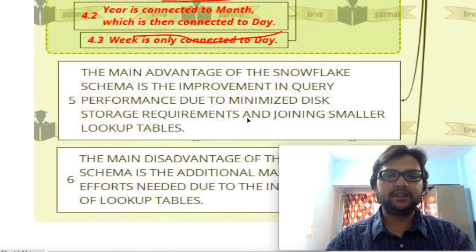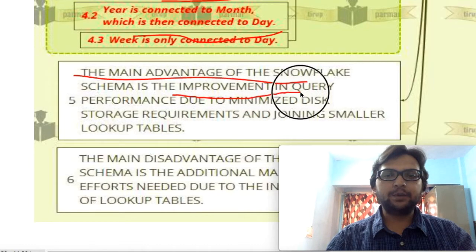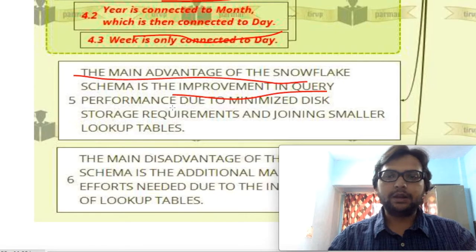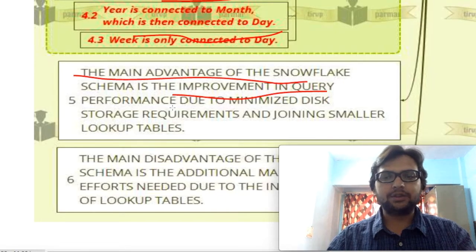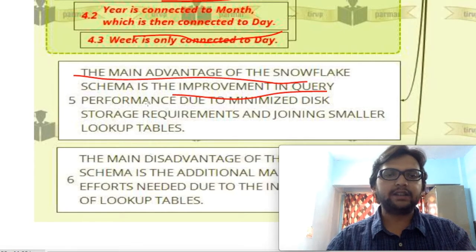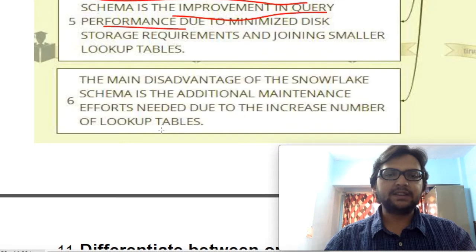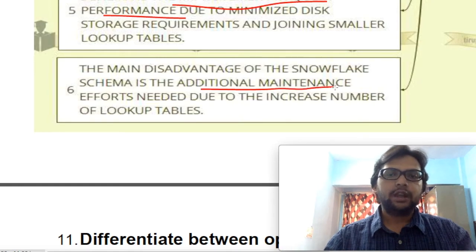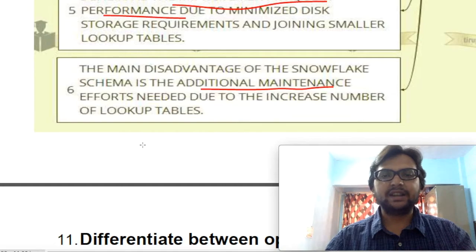The main advantage of Snowflake Schema is improvement in query performance. If we have subdivided our dimension tables, we only need to fire a query on a specific sub-part of that dimension, so results are returned much faster. The disadvantage is that it needs additional maintenance, because we have created many different tables from one dimension and hence we need to maintain all those tables.